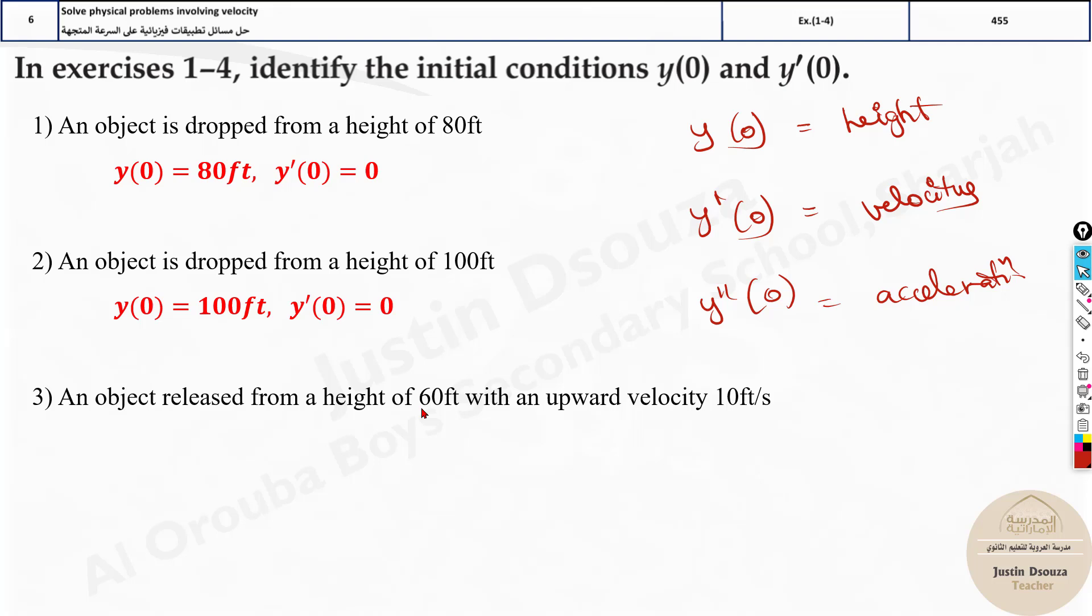Here an object is released from a height of 60 feet with an upward velocity of 10 feet per second. This is yes 60 feet, which is the height. But they have told upward velocity going up. So plus 10 is y dash of 0. It's very important to mention the sign.